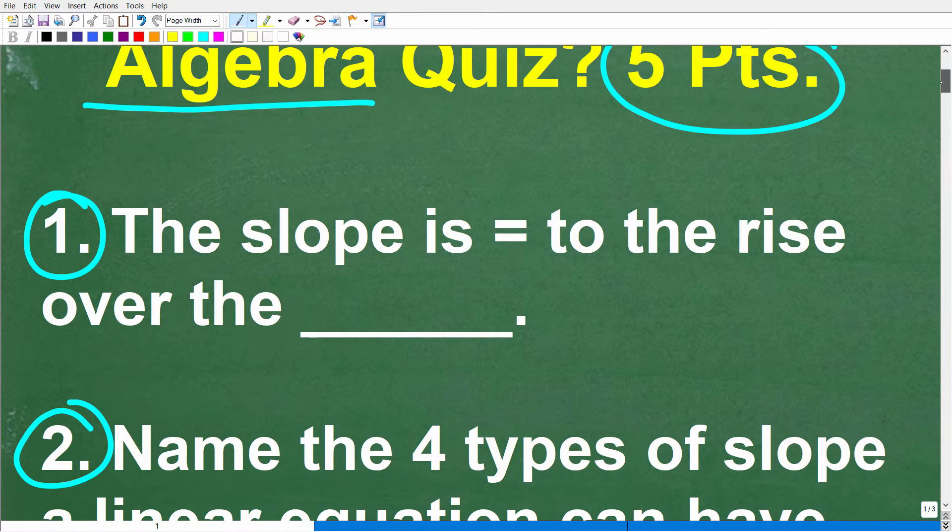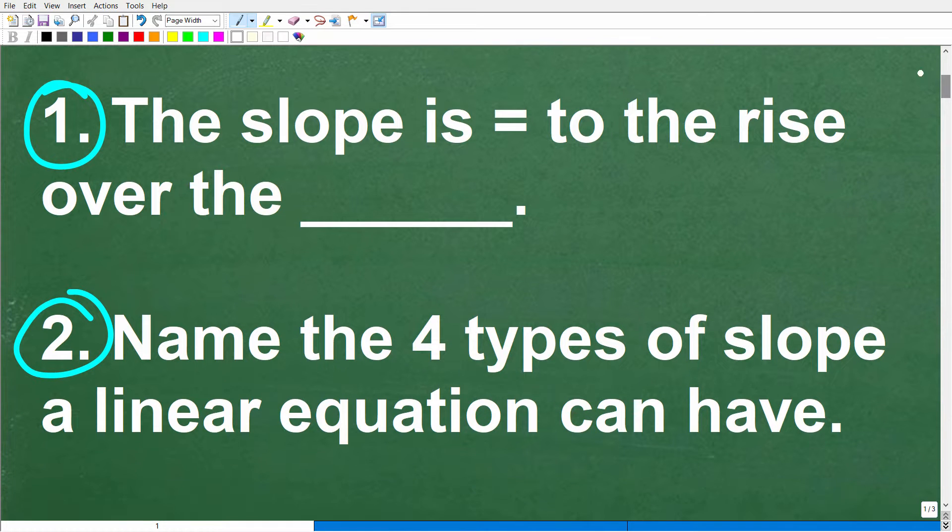So let's go take a look at the quiz one more time, the questions. The slope is equal to the rise over the blank. And the second question is, name the four types of slope a linear equation can have. So let's go ahead and get into it right now.